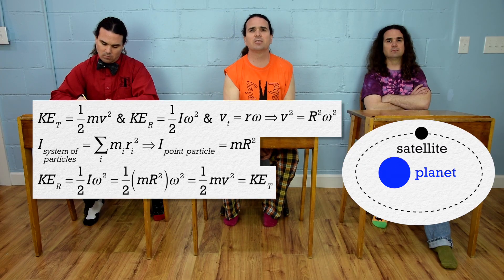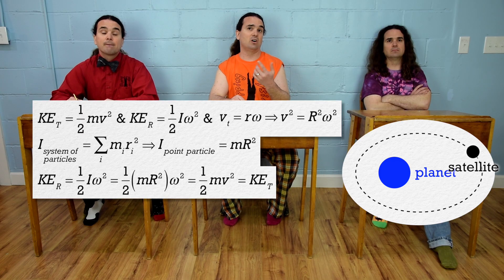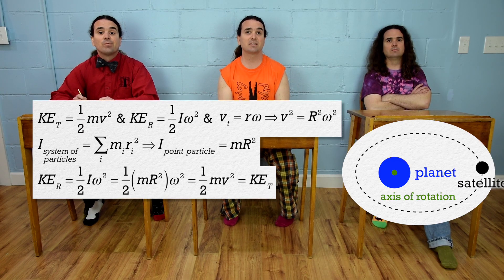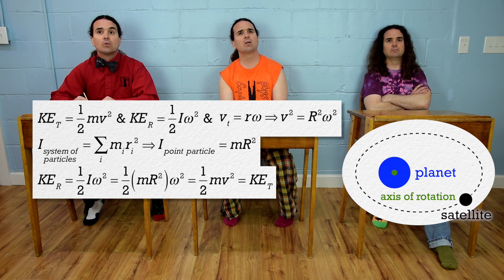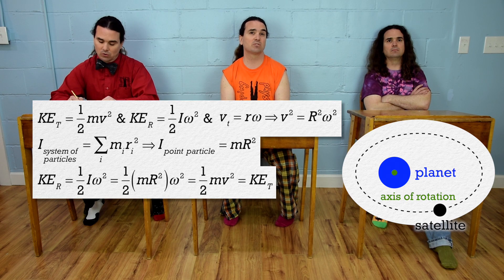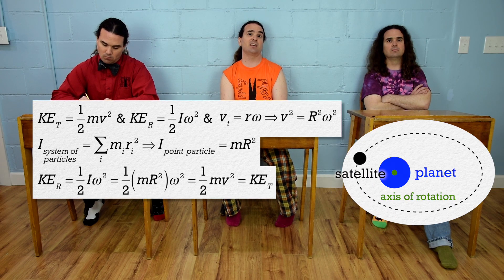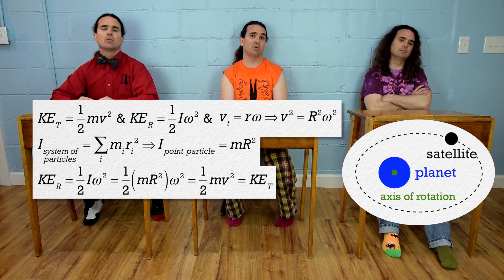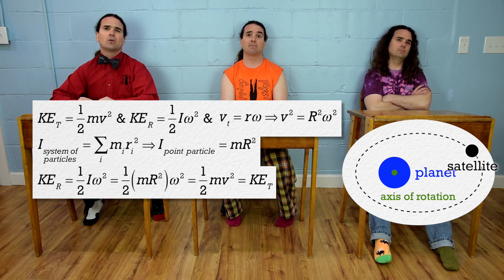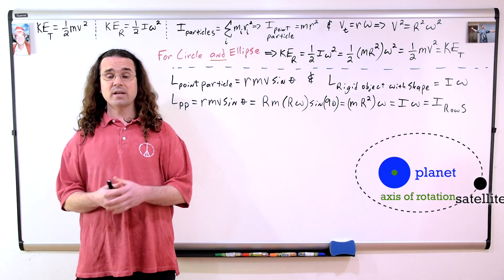Looking at the kinetic energy equations, I do not see anything that changes. r is still the distance from the axis of rotation to the center of mass of the point particle. The value of r will change as the point particle moves through the ellipse, but it still has the same value for the rotational inertia and tangential velocity equations. So the kinetic energy equations are still the same, even if the point particle is moving in an ellipse. That's correct, Bobby.